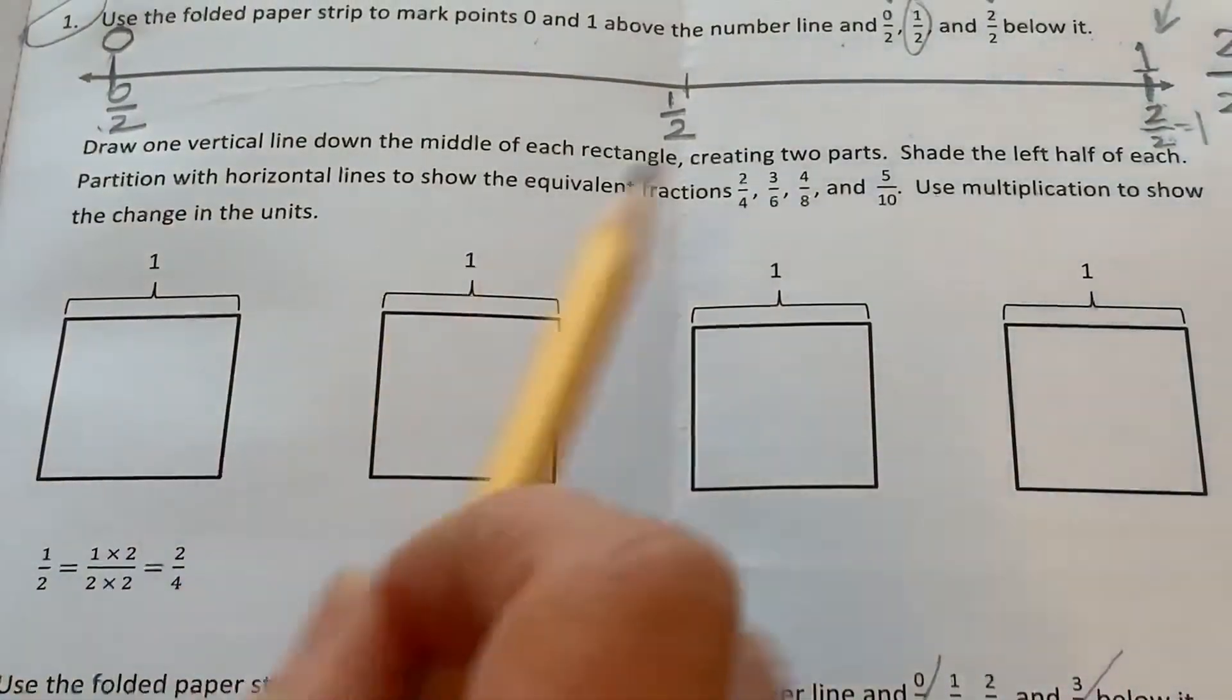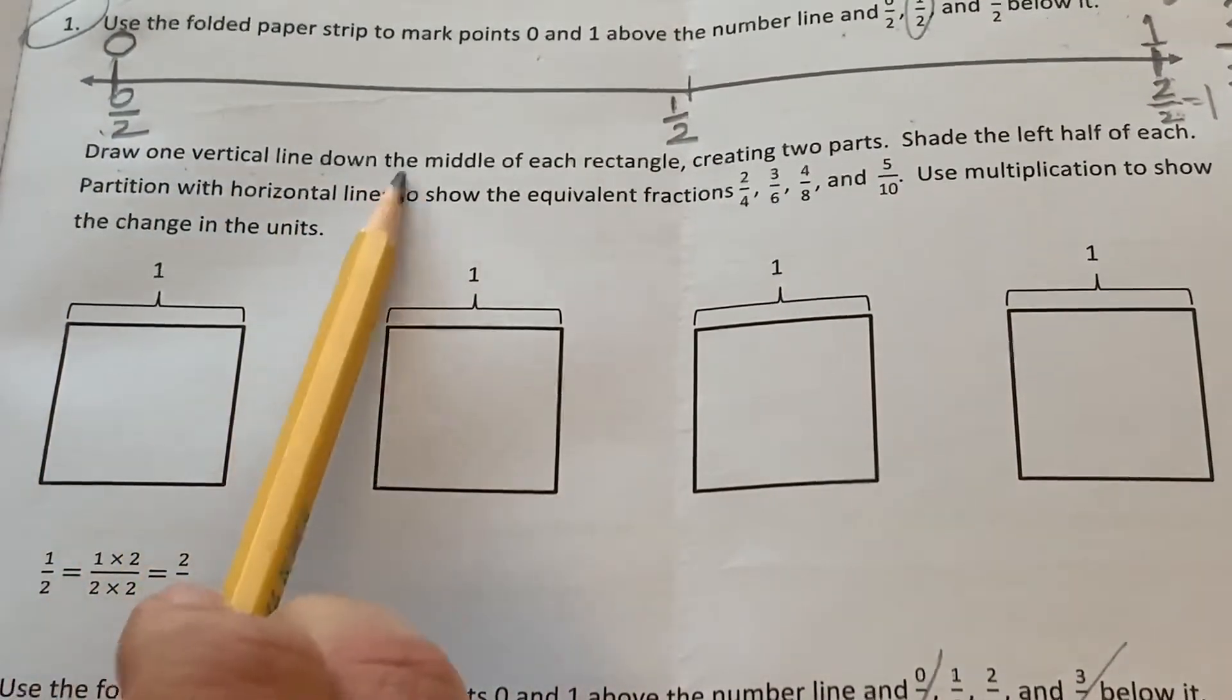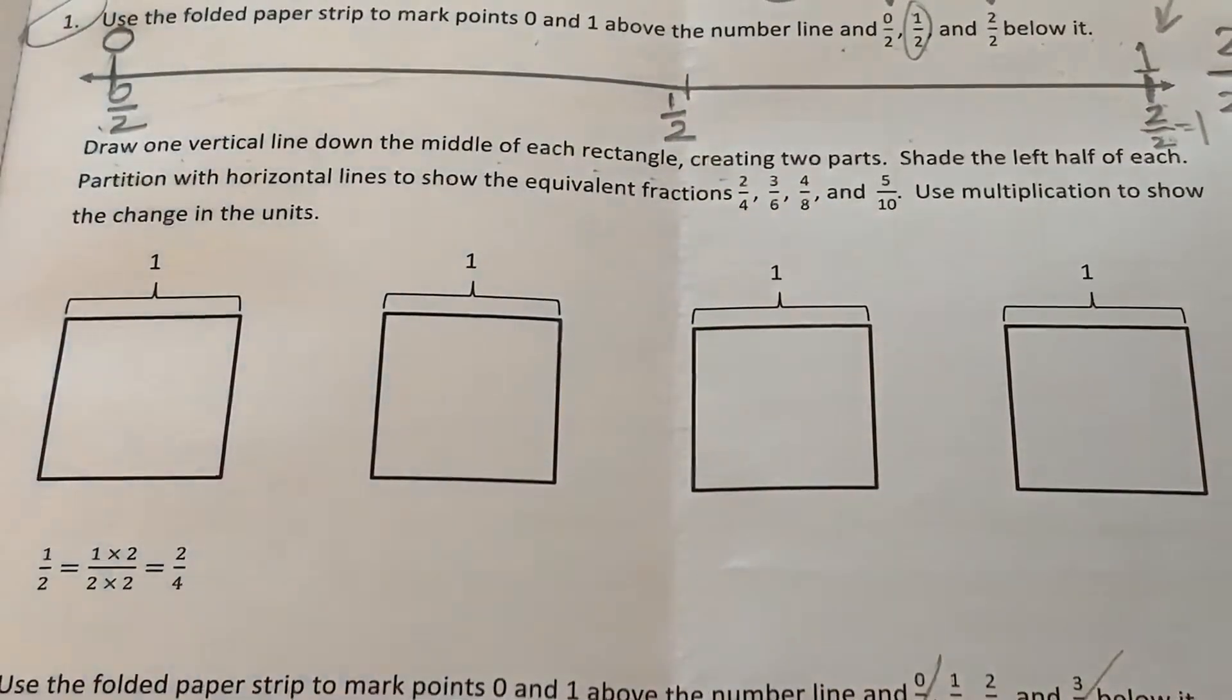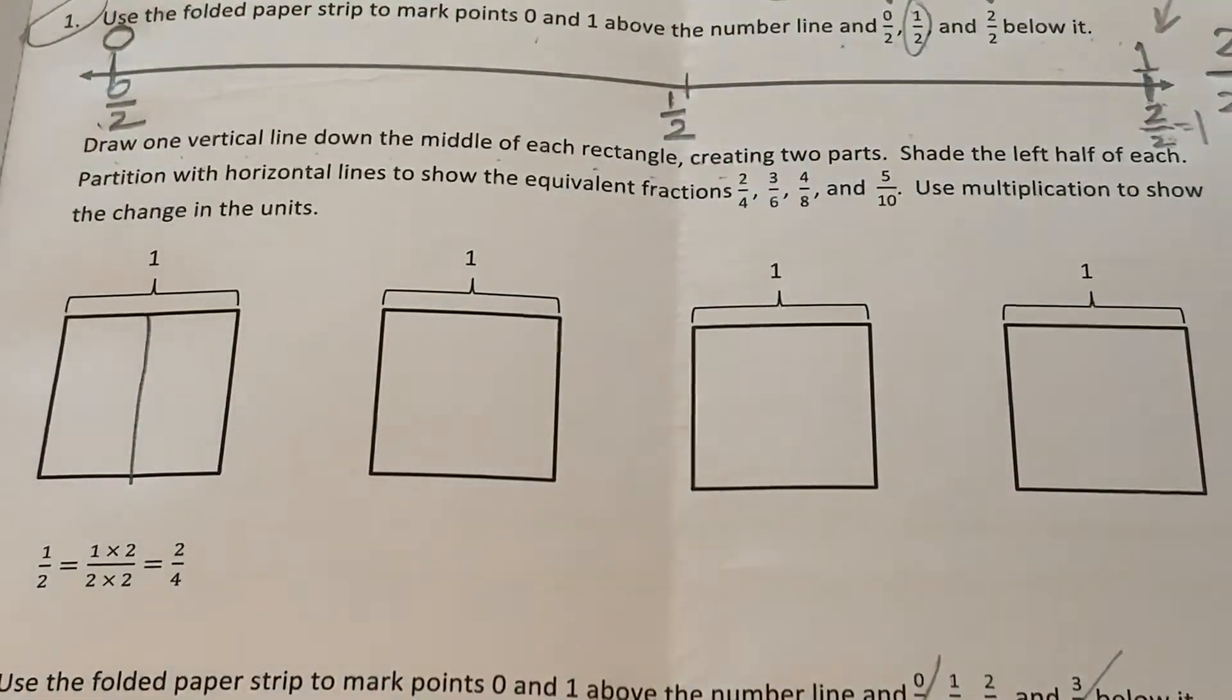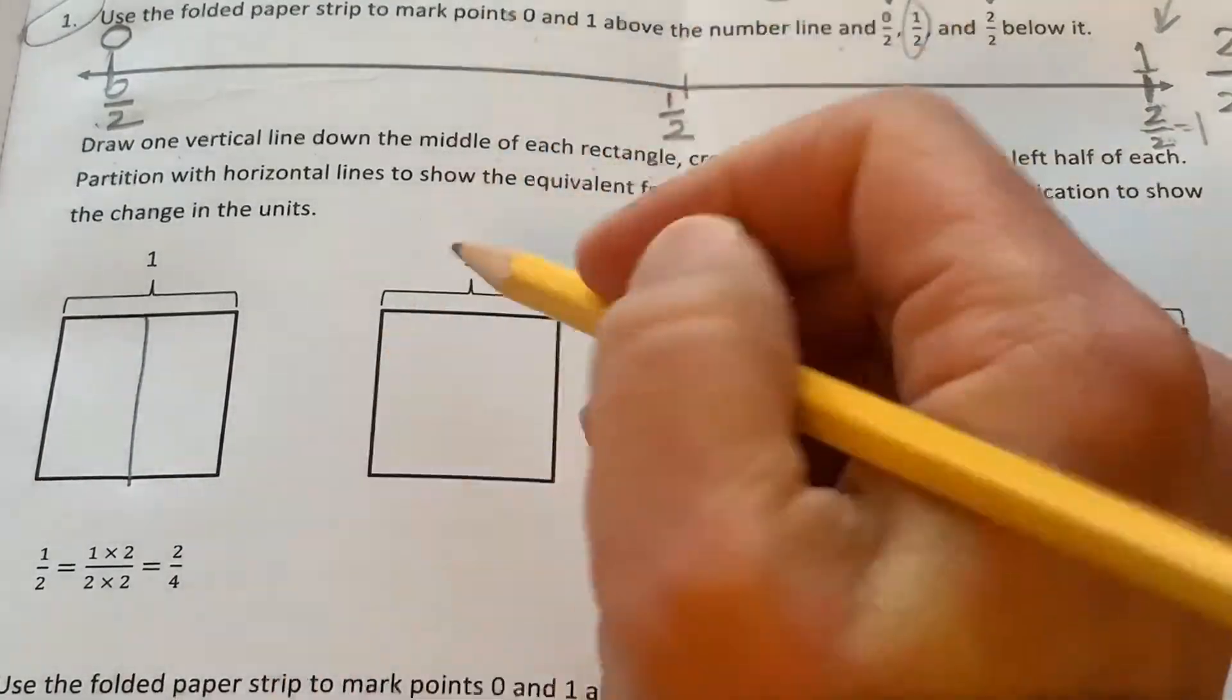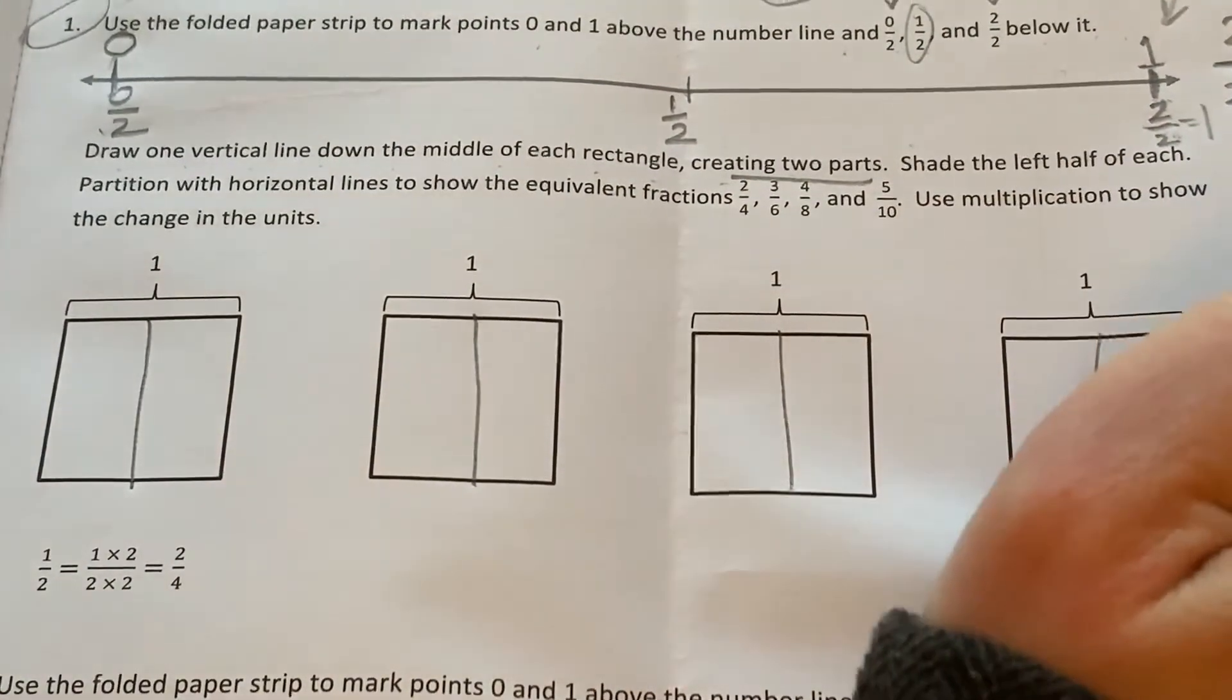So it says, draw one vertical line down the middle of each rectangle, creating two parts. Okay, you do that. Remember, a vertical line looks like that. Draw one down each rectangle, creating two parts. So we're basically drawing halves. We're drawing fractions.